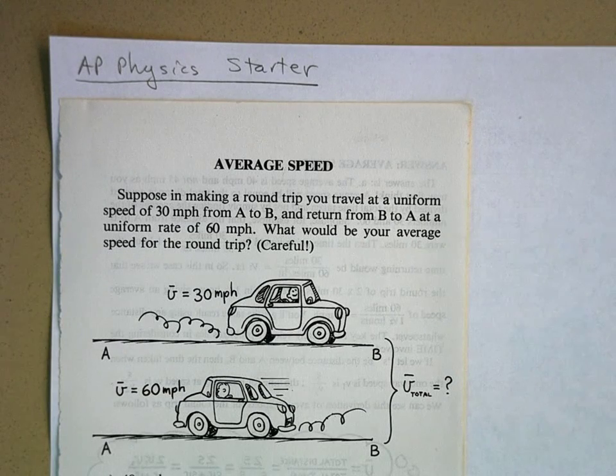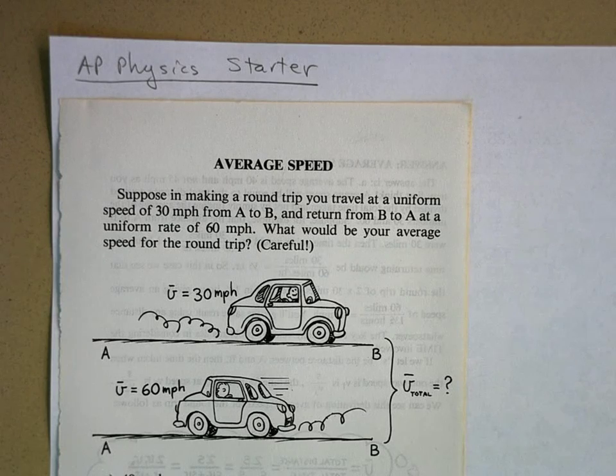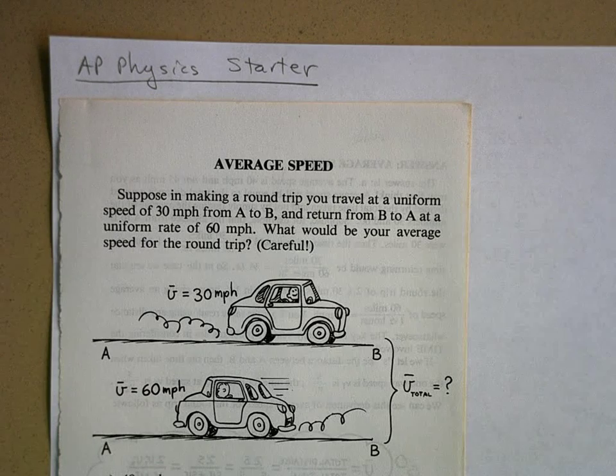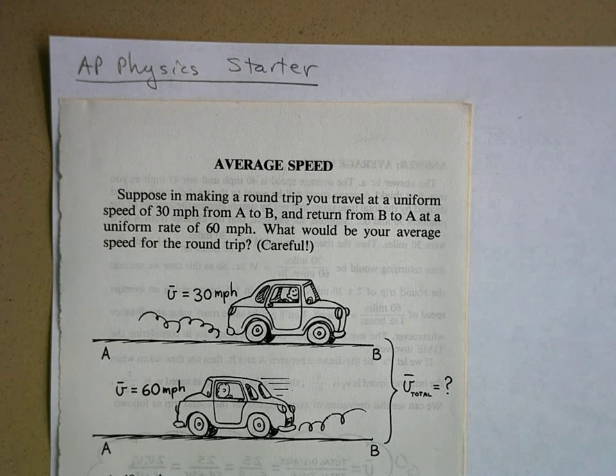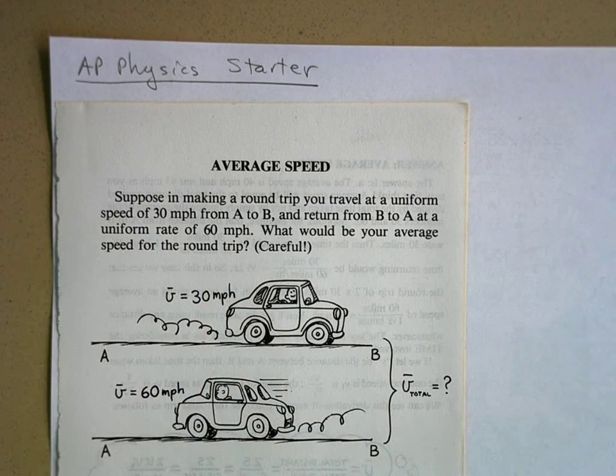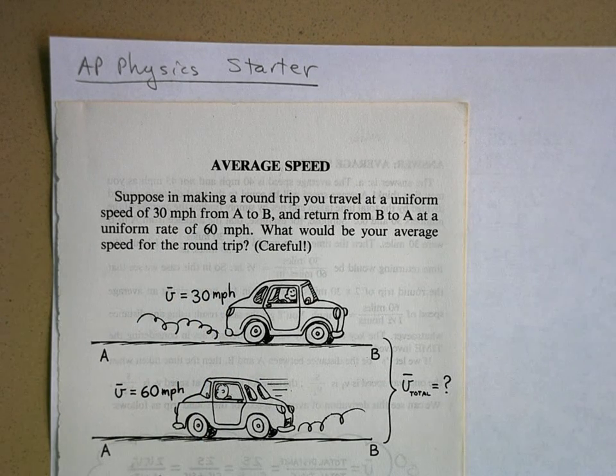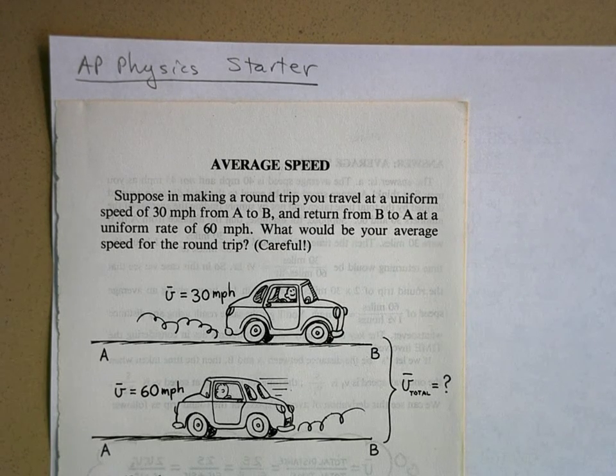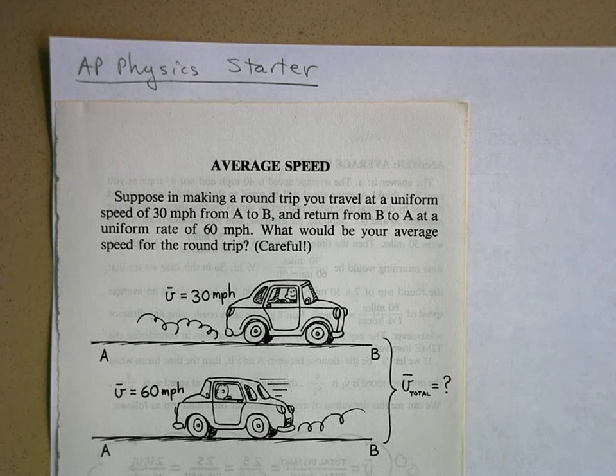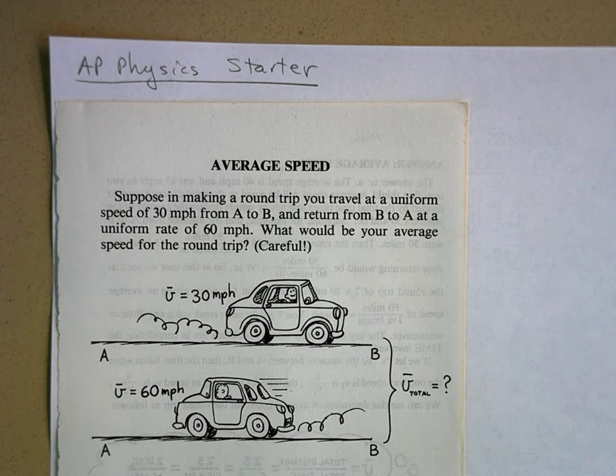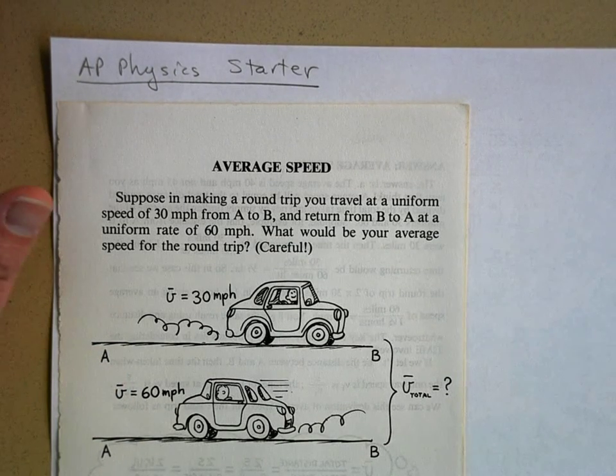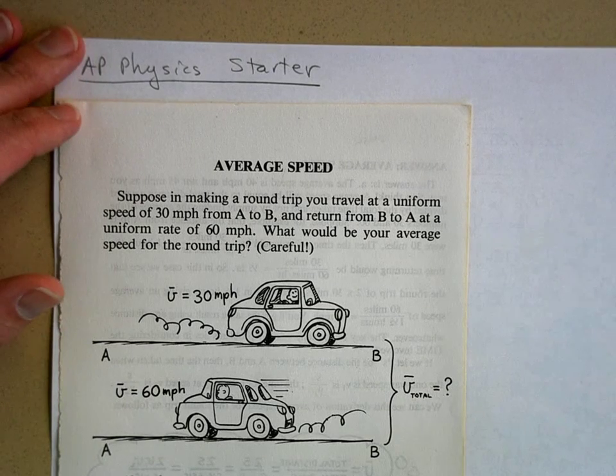Notice it says careful. The reason it says careful is that this word average - one is tempted to just take a simple average of the two speeds. You could say well, we're averaging 30 miles per hour and 60 miles per hour over the same distance, so 30 plus 60 is 90 divided by 2 is 45. That would be wrong. You can't just take a simple average because average speed means something different than a simple average.